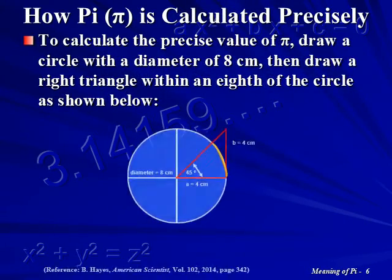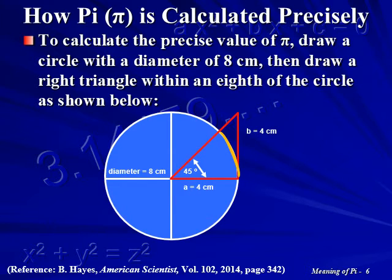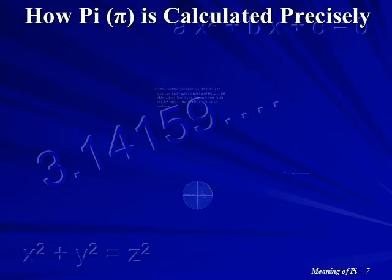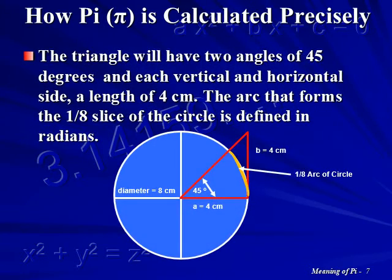To calculate the precise value of Pi, draw a circle with a diameter of 8 centimeters, then draw a right triangle within an eighth of the circle as shown in the diagram. The triangle will have two angles of 45 degrees. Each vertical and horizontal side will have a length of 4 centimeters.